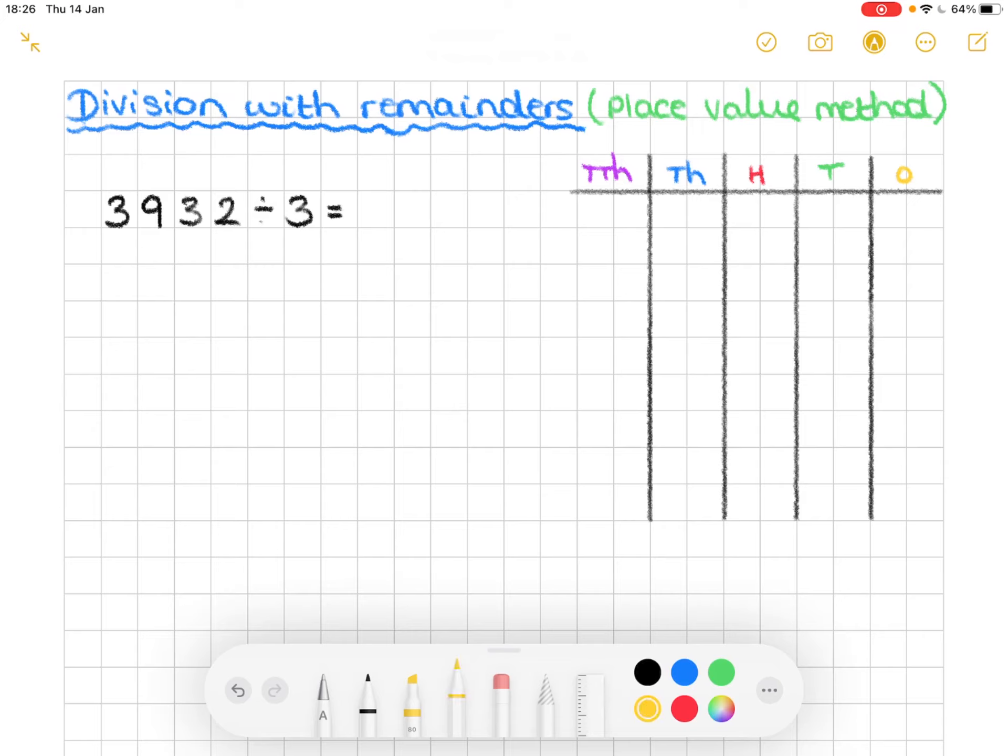So we have two in our ones column. So there's two. We have three in our tens column. One, two, three.